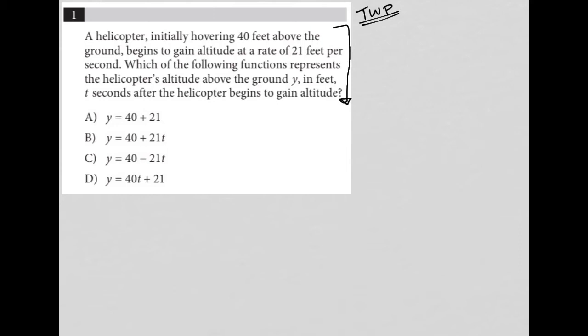The question starts off by saying a helicopter initially hovering 40 feet above the ground. So I'm actually going to draw this. I'm going to say that's the ground and here's my helicopter and this is 40 feet. So that's my translation of the first part of that sentence.